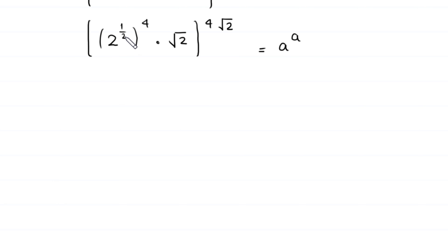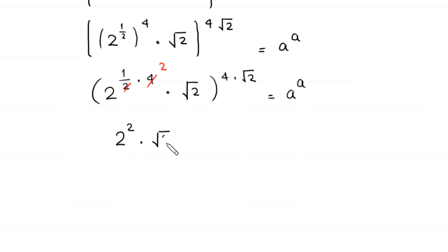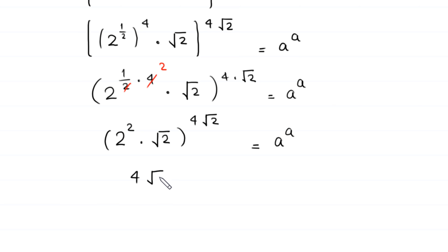Now, this √2 is the same as 2 to the power 1 over 2, whole to the power 4, times this √2 to the power 1 will become root 2 times root 2, whole to the power 4 times root 2, equal to a to the power a. This 2 to the power 1 over 2, whole to the power 4, will become 2 to the power 1 over 2 times 4, times root 2 times root 2, whole to the power 4 times root 2, equal to a to the power a. This will become 2 to the power 2 times root 2, whole to the power 4 times root 2, equal to a to the power a.